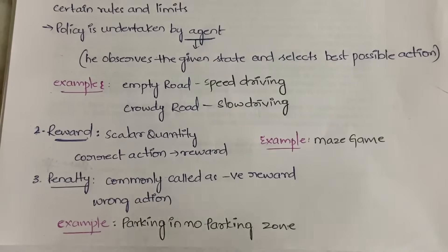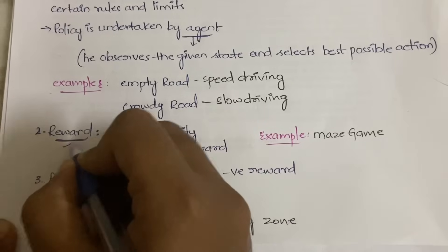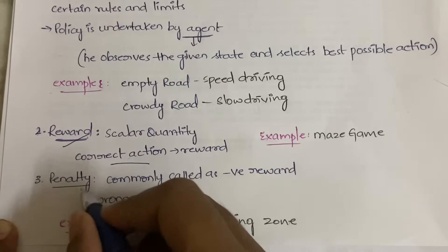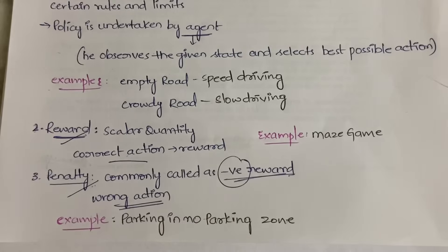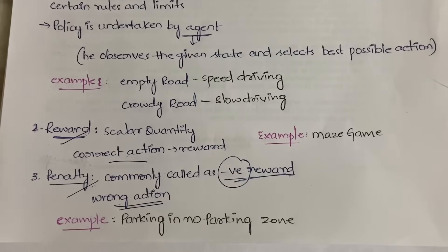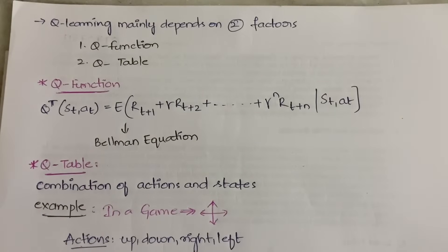The third term is penalty. Whenever you do a wrong action, you get a penalty, which is commonly also called a negative reward. For example, if you park your vehicle in a no-parking zone, that is a wrong action, and you pay a fine — that is your penalty, your negative reward. Instead of giving you money, they are taking money from you.